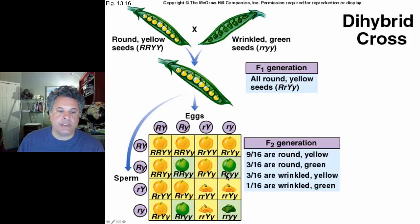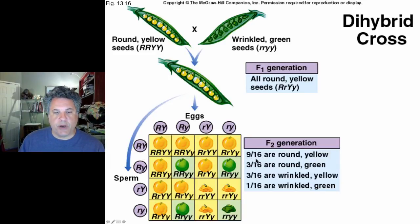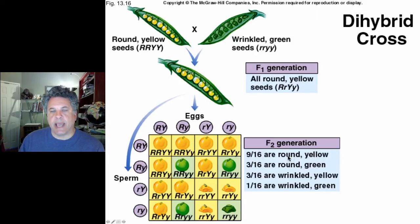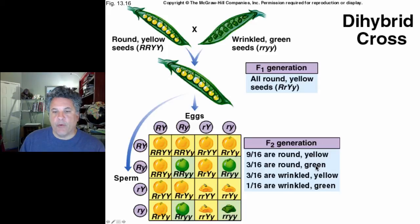Mendel deduced the equal gamete proportions based on phenotype ratios in the F2 generation from random mixing of gametes through fertilization. He observed the classic 9-3-3-1 ratio: 9/16 of progeny are doubly dominant with round and yellow phenotypes, only 1/16 are wrinkled and green with double recessive phenotypes, and 3/16 have the dominant phenotype for texture but recessive for color.